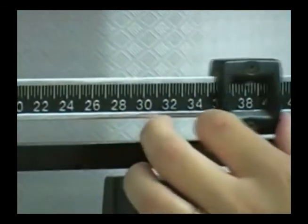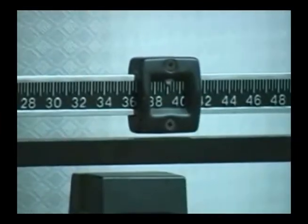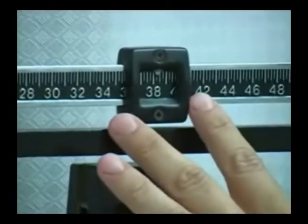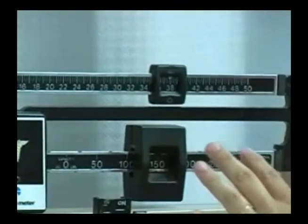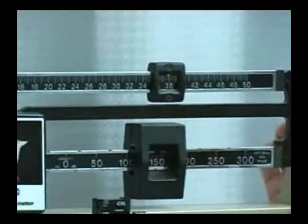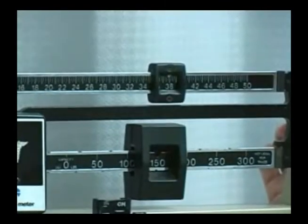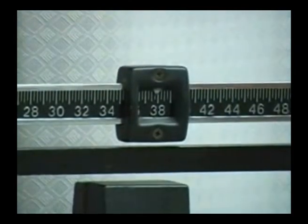If a person weighed 150 pounds, if we brought this over to 150, and the bar, if the bar would balance about right there, this person would weigh 37 and 3 quarters plus 150, which would put them at 187 and 3 quarters pounds.